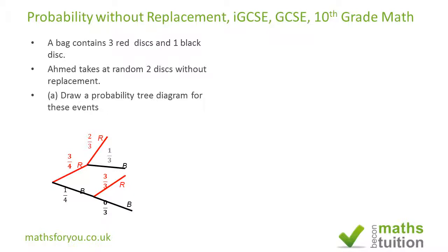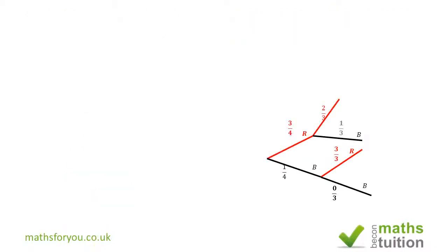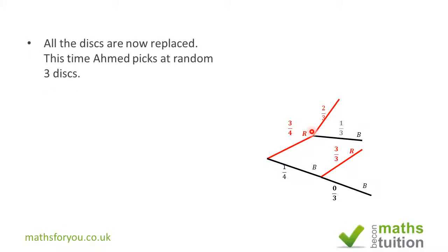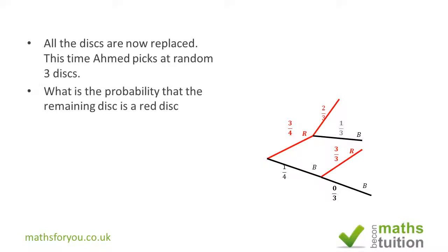Now we move on to the next subsection. There is no requirement to produce a tree diagram here — this tree diagram was from the first subsection — but I think it makes sense to produce one for this subsection too, because we are now going to pick three disks. The previous tree diagram was for picking two disks only, but it will help us understand what to do.